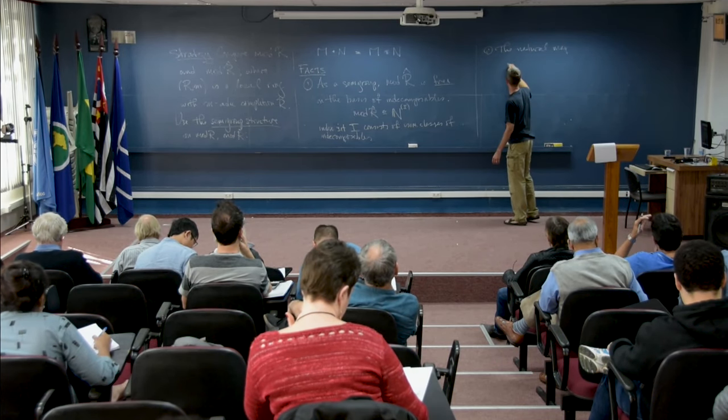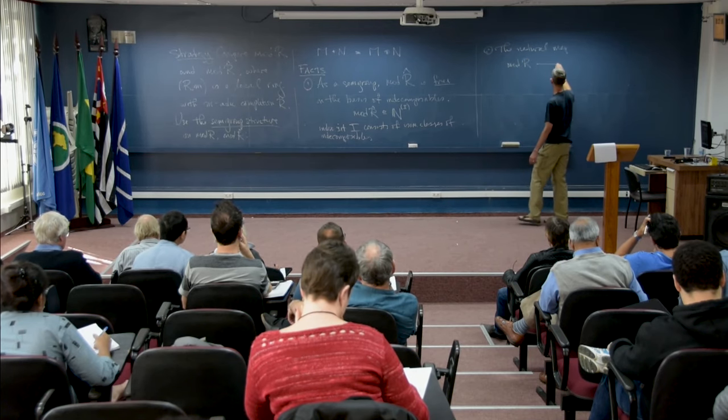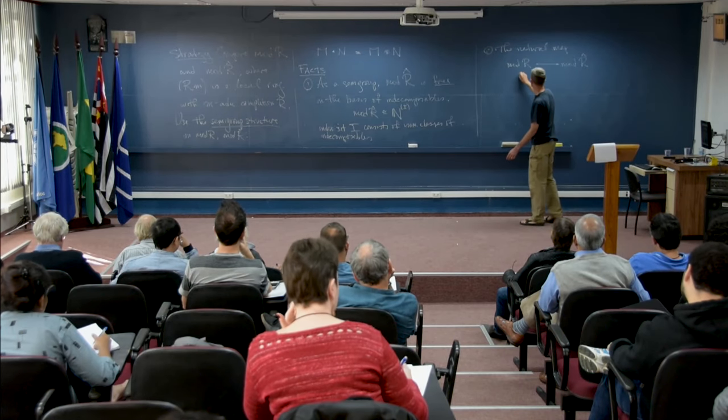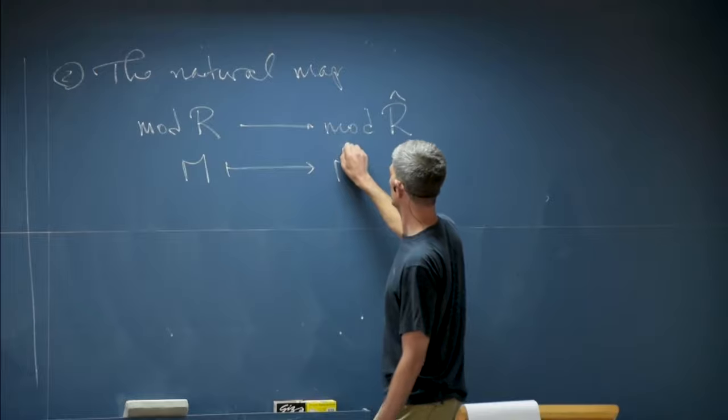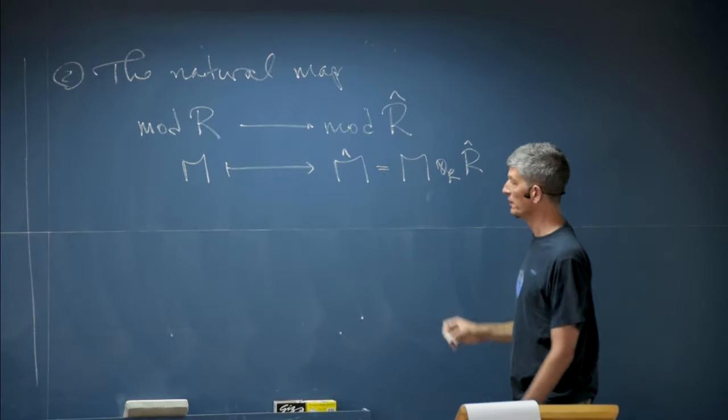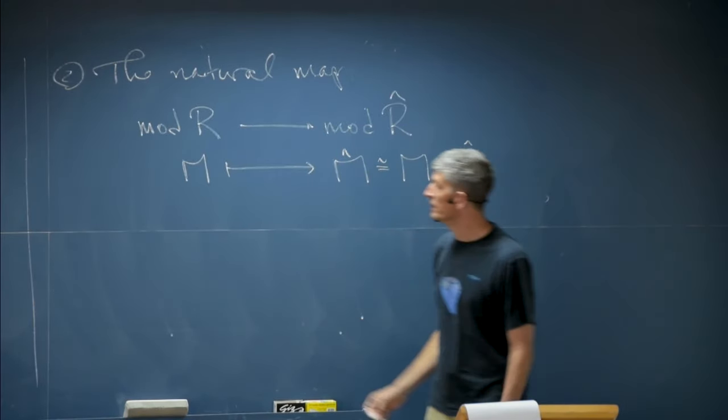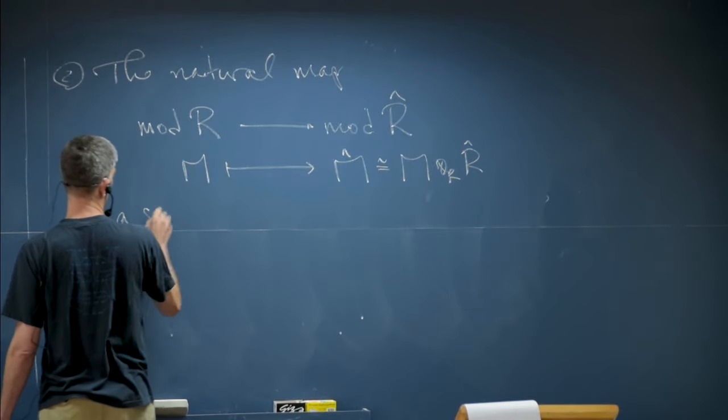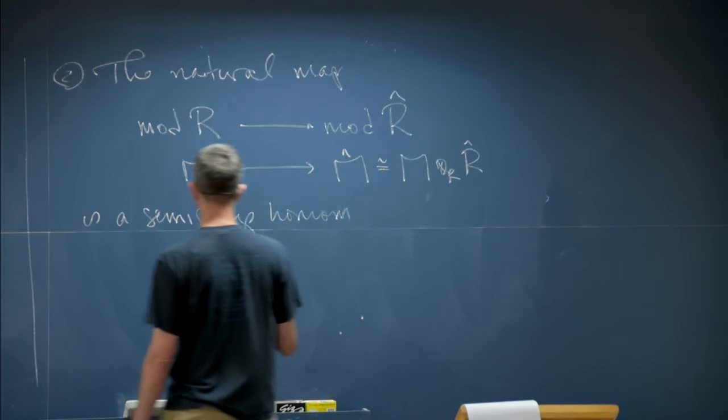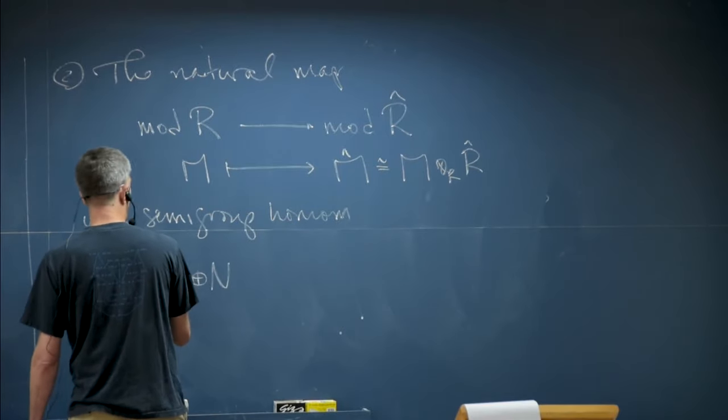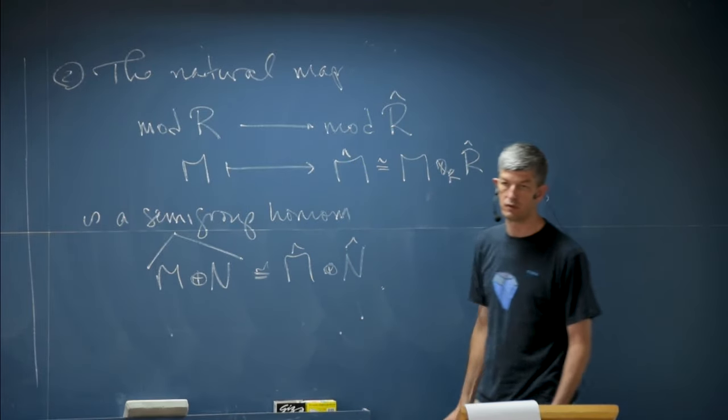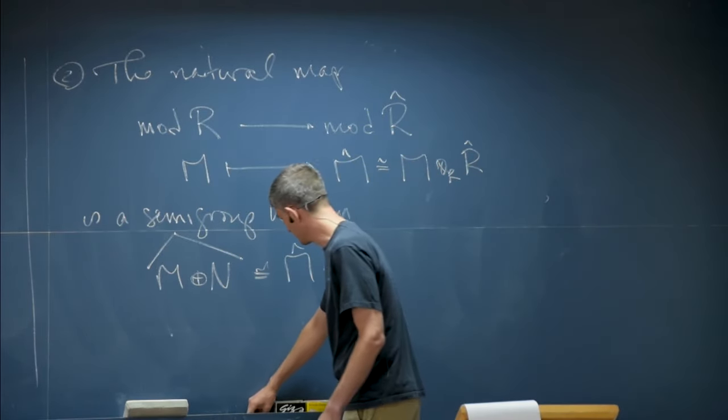Secondly, the natural map from mod R to mod R hat where you just take a module and complete it, or if you prefer tensor with the completion, same thing, is a semi-group homomorphism. That's just to say that M direct sum N hat is isomorphic to the direct sum of the hats.